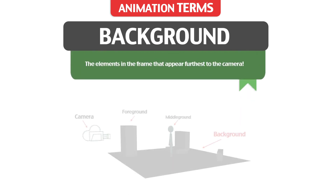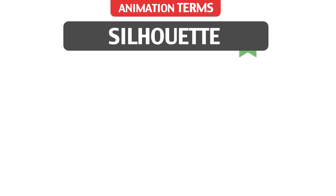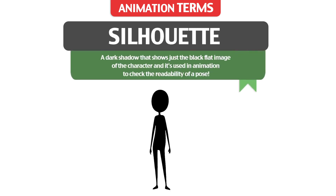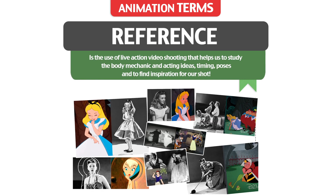Background: the elements in the frame that appear furthest from the camera. Silhouette: a dark shadow that shows just a black flat image of the character, used in animation to check the readability of a pose. Reference: the use of live action video shooting that helps us study the body mechanics and acting ideas, timing, poses, and to find inspiration for our shot.